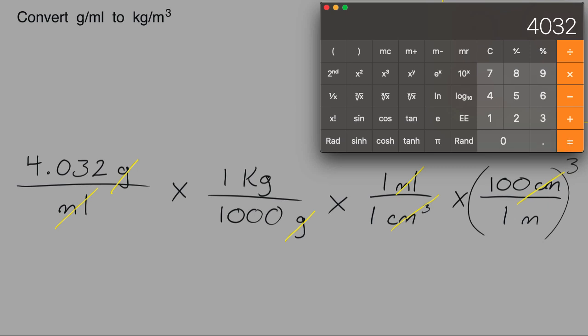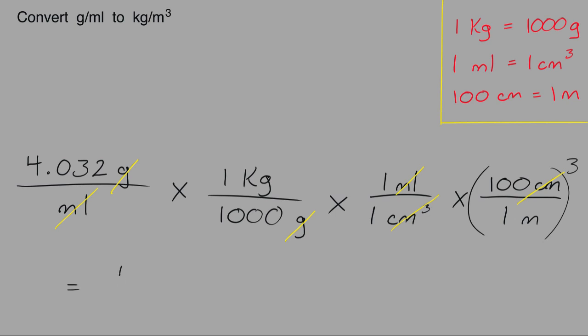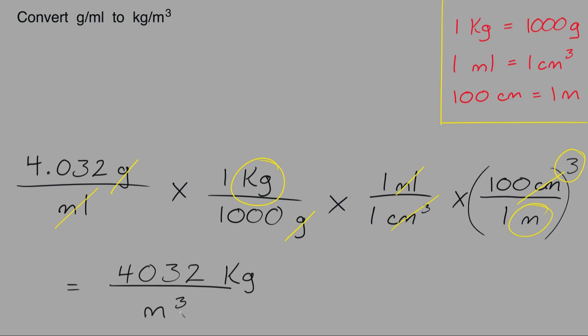So the answer is 4.032. On the top, the only units we have left is kilograms, so this will be kilograms. And on the bottom, the only units we have left is meters cubed, so on the bottom of our fraction we'll have cubic meters. And this is the final answer: 4.032 kilograms per cubic meter.